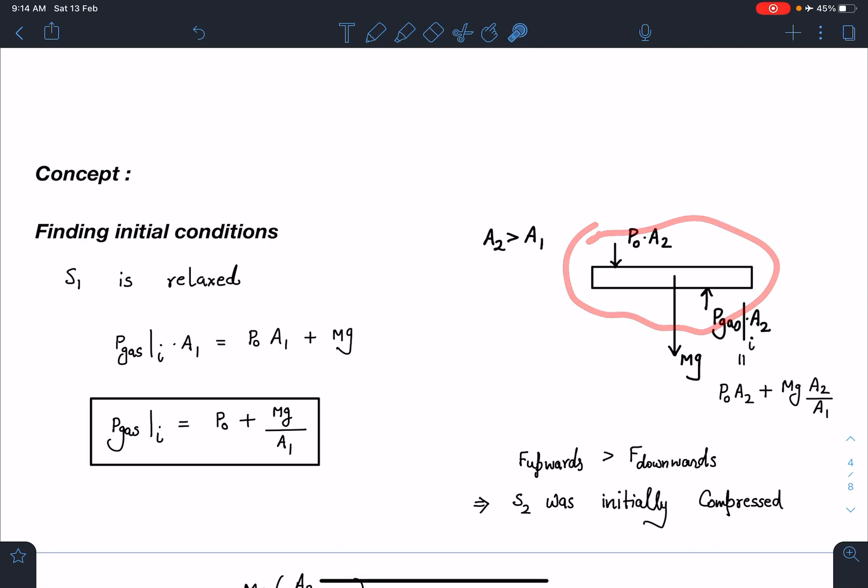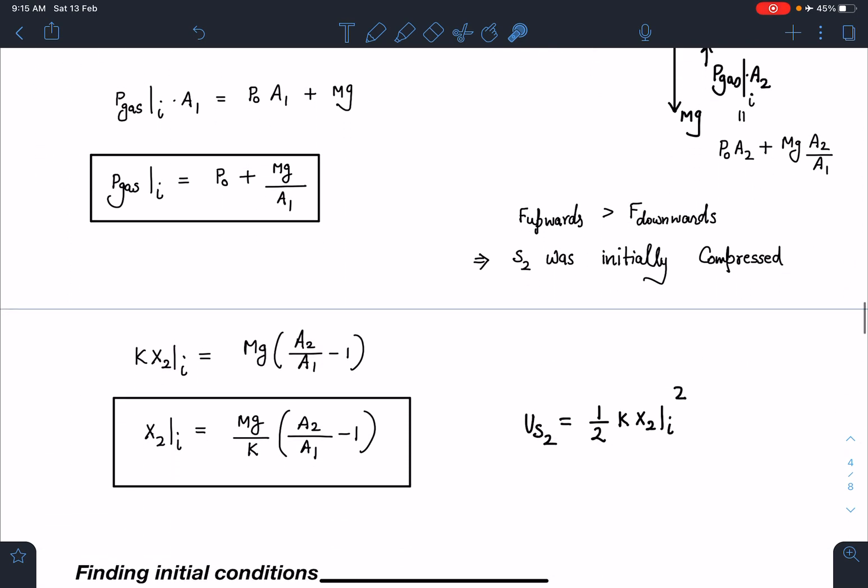On piston 2, if you balance the forces: atmospheric pressure, gas pressure, mg, and spring force. I haven't drawn the spring force because I don't know whether compression or elongation is present. If you substitute the value of P_gas, because in both chambers the pressure of the gas is the same, I'm going to get P0·A2 plus mg·A2/A1. This P0·A2 will get cancelled. If you see, the net force in the upward direction is more than the net downward force, so definitely the spring was initially compressed if I am solving with A2 greater than A1. Otherwise, for A1 greater than A2, the spring will be elongated.